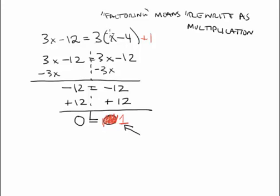We could have multiplied this out, 3x minus 12, plus 1. We could have taken away both sides, 12, or added 12 to both sides, we would have ended up with 0 equals 1. This is nonsense. 0 does not equal 1.